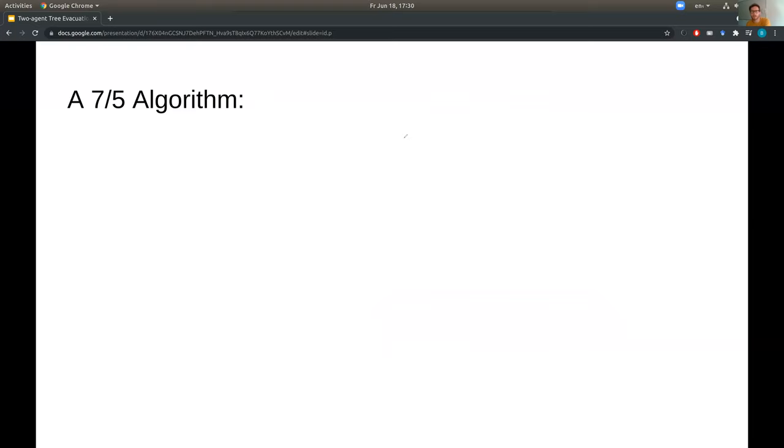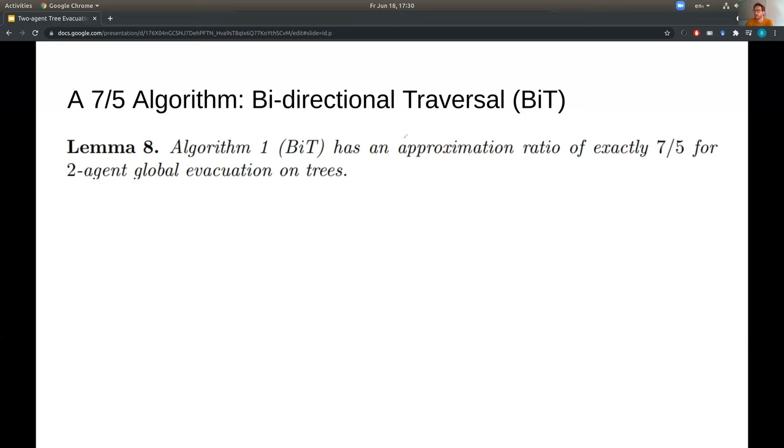So with our brand new lower bound, we can give a brand new 7 over 5 algorithm for tree evacuation called BIT again. And in fact, we just give a tighter analysis using these two lower bounds, and this analysis turns out to be tight. So we can show an example of when the algorithm achieves exactly 7 over 5 approximation ratio. So here we see that the optimum algorithm has a very simple strategy. One agent goes to V1, whereas the other agent goes to V2, and they meet finally at U. So if the exit is at U, then they reach it at time 5.